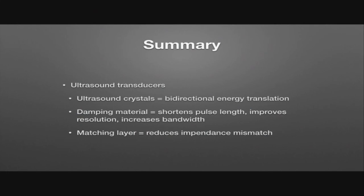In summary, there are many different types of ultrasound transducers operating at different frequencies, dependent on the different ultrasound crystals contained in them. Ultrasound crystals have bi-directional energy translation properties. Behind the crystals is a damping material that shortens pulse duration, improving resolution but increasing bandwidth — and transducers have a limited bandwidth they can operate at, so a tradeoff must be made between resolution and bandwidth. The matching layer in front of the crystals minimizes the impedance mismatch between the ultrasound crystals and soft tissue, and ultrasound gel also helps with this.